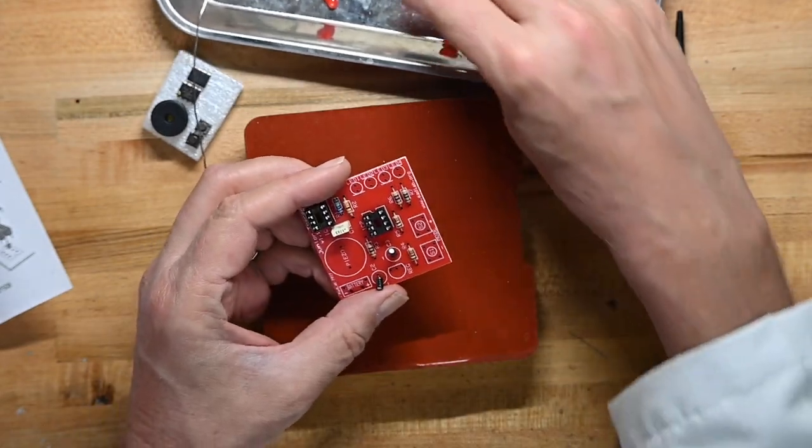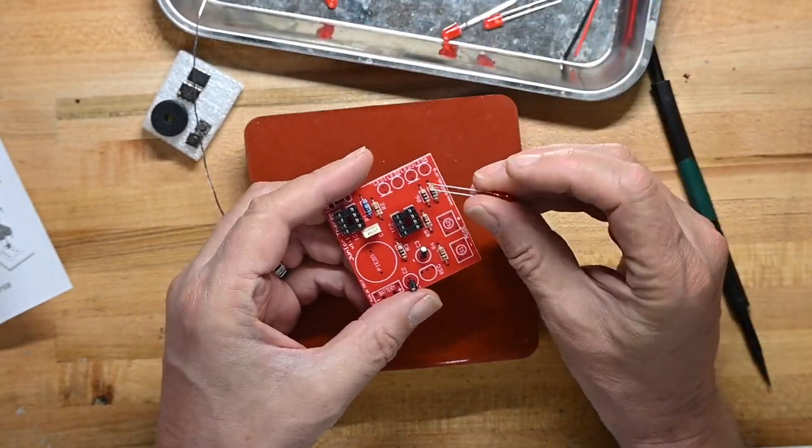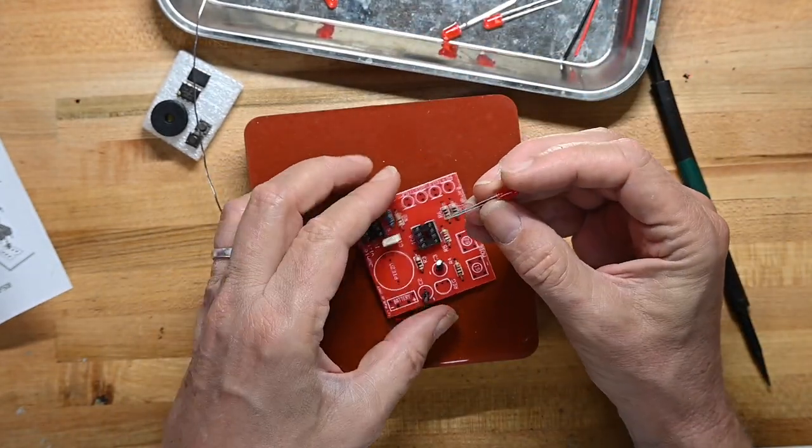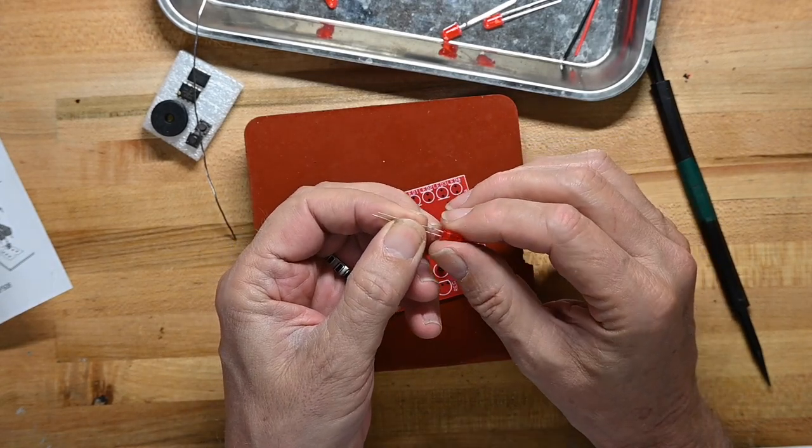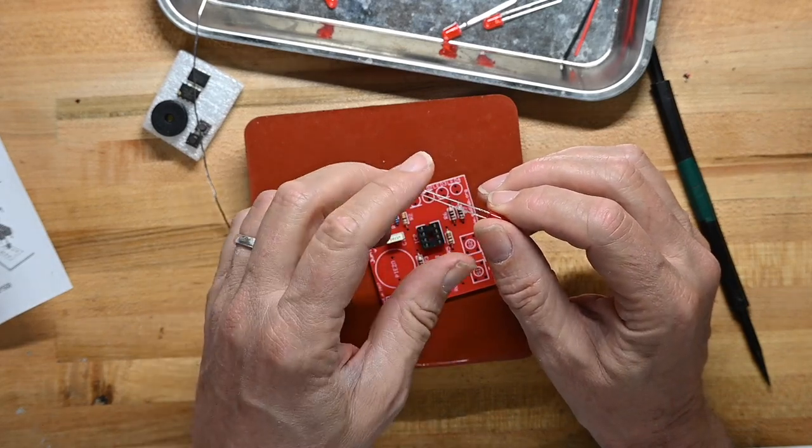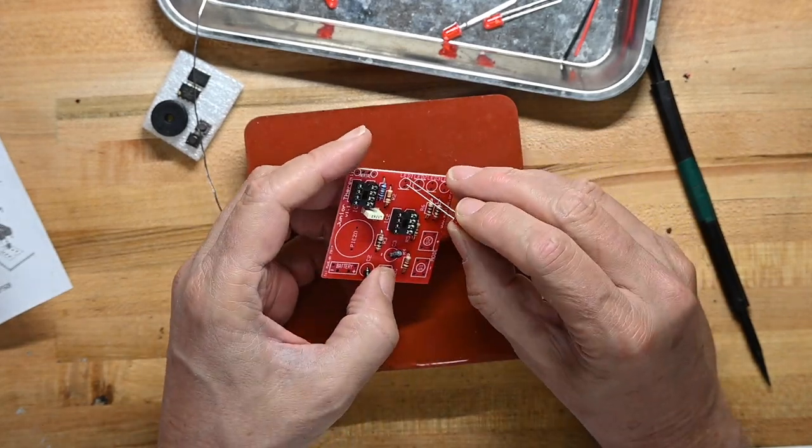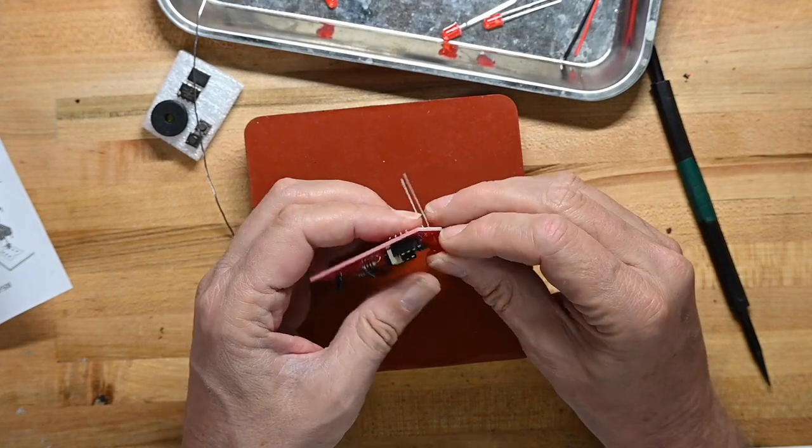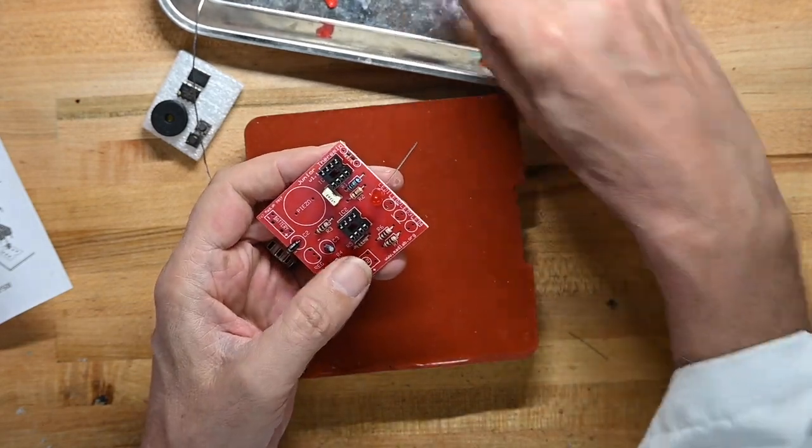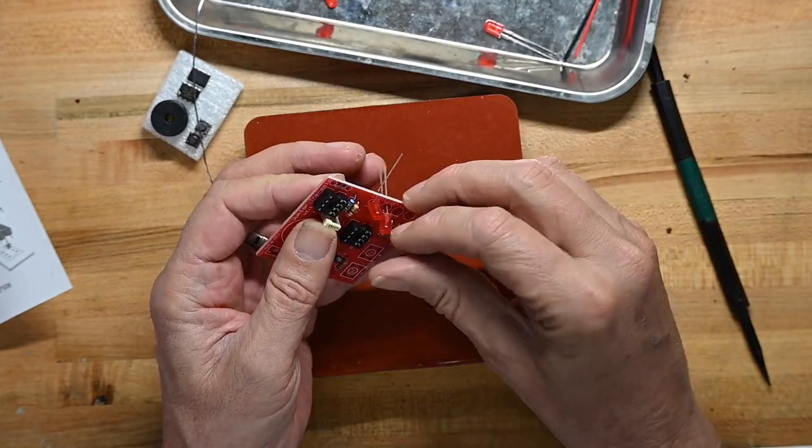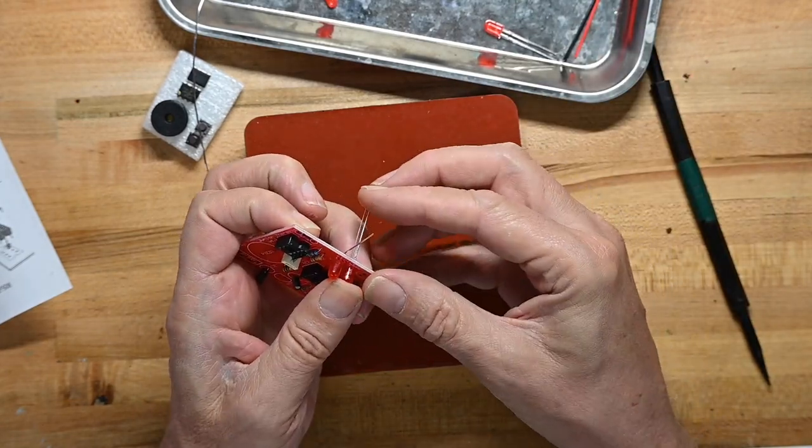Now we'll do the LEDs and again the little stripe corresponds to the side of the LED that's got a little flat spot. It also has the shorter component lead. So put all these in place. And that's the cathode or negative lead.